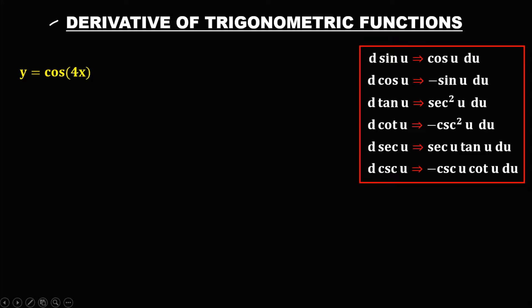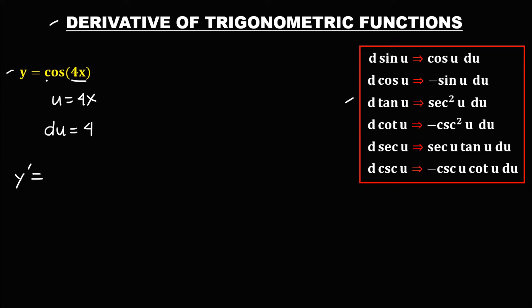To find the derivative of trigonometric functions, these are the formulas. For this given, u is equal to 4x, and for the derivative of u, du is equal to 4. Now to find the derivative of this given function: